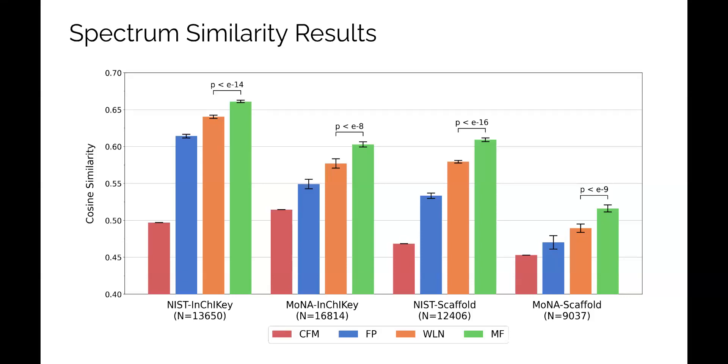We ran experiments using held out data from two different spectrum datasets, NIST-20, which is the same library we use for training, and MassBank of North America, or MONA, a free online repository of mass spec data. Across all datasets and splitting strategies, we found that MassFormer was statistically superior to the other models.